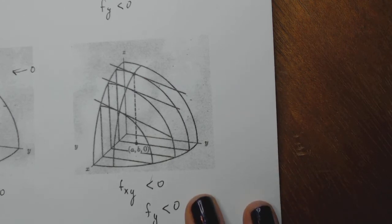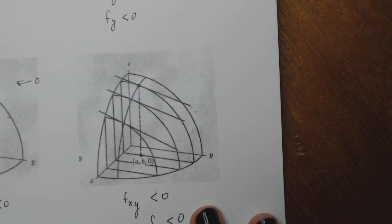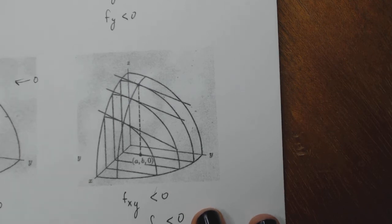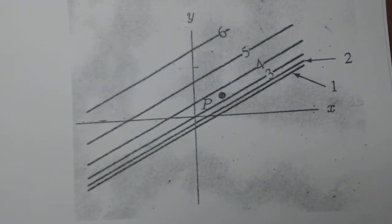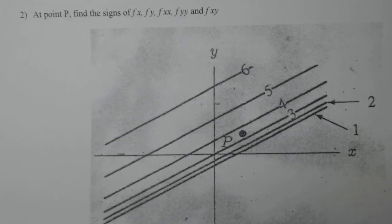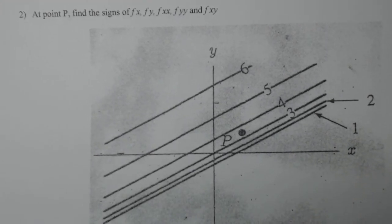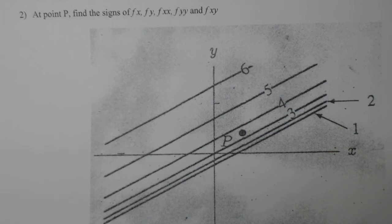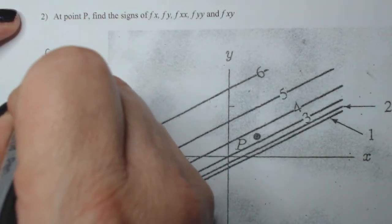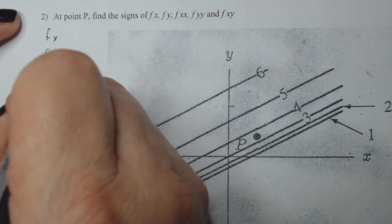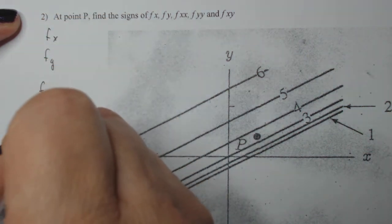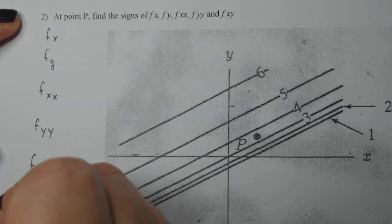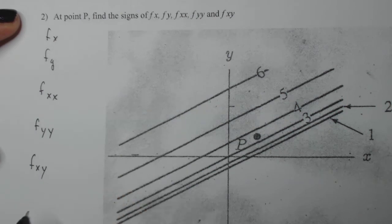That's a visualization of how this works in three-space. You probably won't have to do this a lot, but it's a nice idea to see how things work. Now for the contour map problem: at point P, find the signs of f_x, f_y, f_xx, f_yy, and f_xy. Remember that f_yx equals f_xy. Moving parallel to the x-axis from point P, z goes from 3 to 2 to 1 — z is decreasing. So x is increasing while z is decreasing, which means f_x is negative.